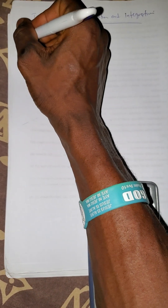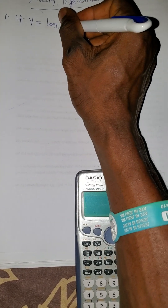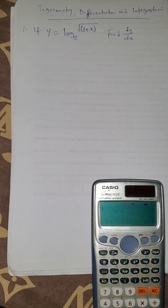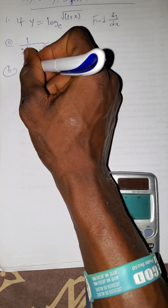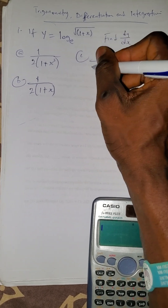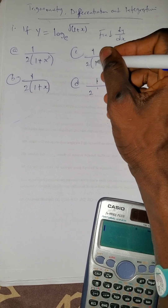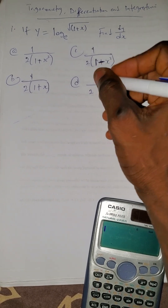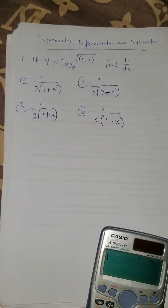The first question says: if y equals log of root of (1 + x) base exponential, find dy/dx. Option A is 1 over 2(1 + x²), option B is 1 over 2(1 + x), option C is 1 over 2(1 + x²), option D is 1 over 2(1 - x²), and 1 over 2(1 - x). Now how will you find the differentiation of this?